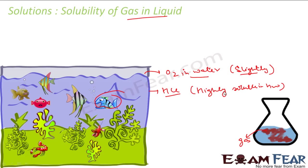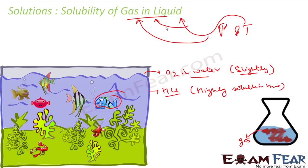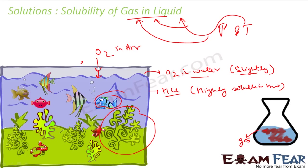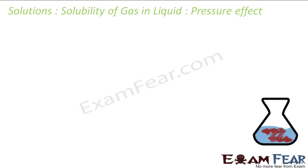The solubility of gas in liquid is highly impacted by pressure and temperature. Changing pressure or temperature affects both liquid and gas. As I mentioned, oxygen dissolved in water sustains all aquatic life. The source of this oxygen in water is oxygen in the air — they remain in equilibrium, continuously exchanging — as well as oxygen produced by aquatic plants.